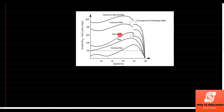If we use a capacitor start induction motor, the torque value is non-zero at starting. This graph shows the dotted line representing the changeover of the centrifugal switch. When the motor starts, the capacitor is connected; when speed increases, the centrifugal switch disconnects the capacitor. This changeover is shown in the graph. So this is all about the characteristics of the single phase induction motor. Thank you for the class.